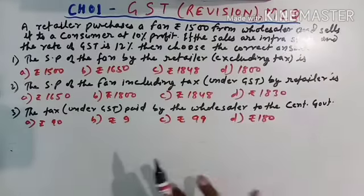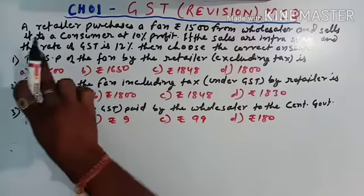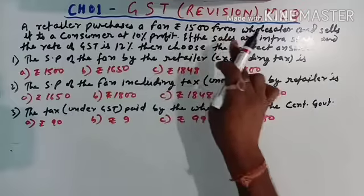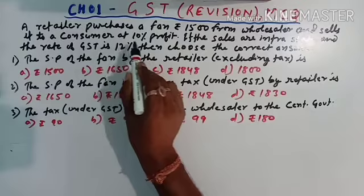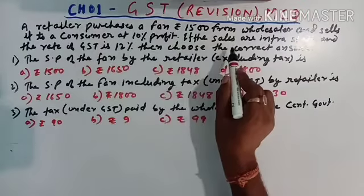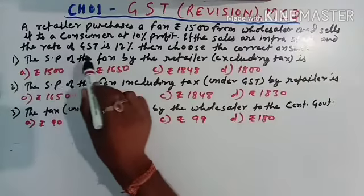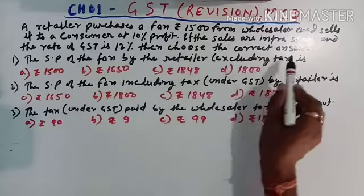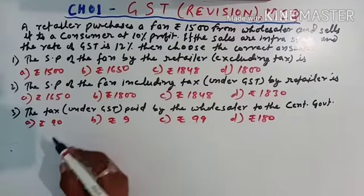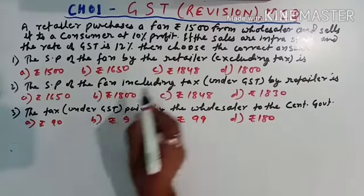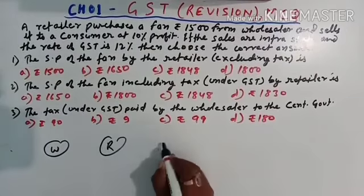Multiple choice questions. So here I have already mentioned one question, which is also given in your book. A retailer purchases a fan for Rs. 1500 from wholesaler and sells it to the consumer at 10% profit. If the sales are intrastate, that means within the state, and the rate of GST is 12%, then choose the correct answers from the following questions.